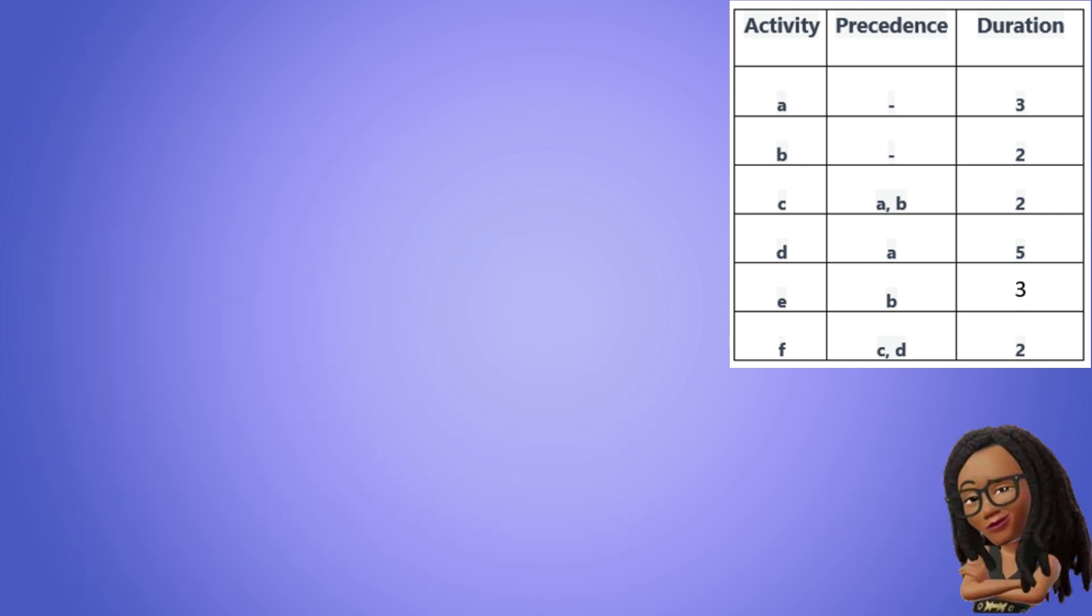Now let's get to drawing. First, we create a start node where all the activities will flow from. As we can see, both A and B do not have any precedence activities, so that tells us that they are the starting activities of the project. So let's use arrows to connect them to the start node. We will also add their durations for reference.